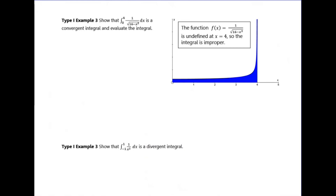Let's look at another convergent integral. This example asks us to show that this integral is convergent and evaluate it — sketching the graph helps. This one has an asymptote at x equals 4, since you'll get zero in the denominator when x equals 4. So this time we evaluate the integral between zero and t, then take the limit as t tends to 4. Be careful not to accidentally use zero instead of 4 for the asymptote.